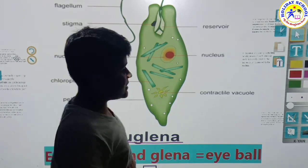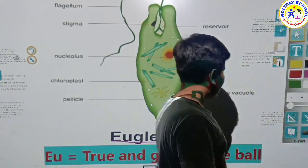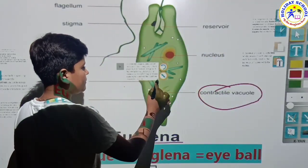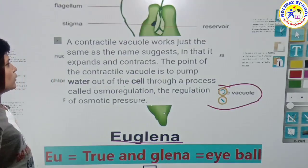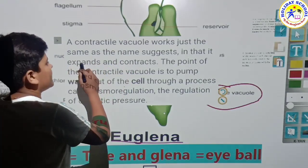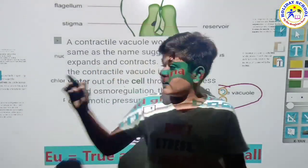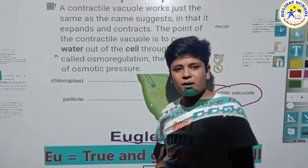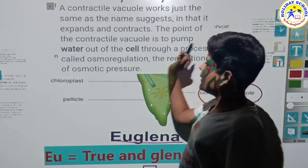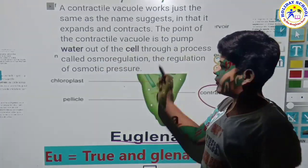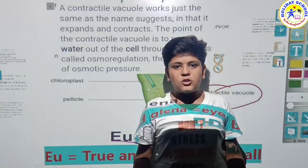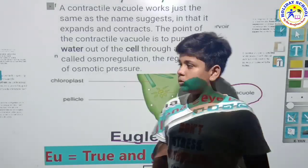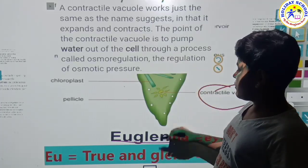Now let's see where the water is stored. The water is stored in a contractile vacuole. A contractile vacuole works just as the name suggests — it expands and contracts. The point of the contractile vacuole is to pump water out of the cell. It stores the water and throws it out from the wall of the Euglena.